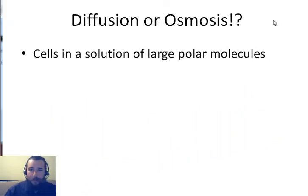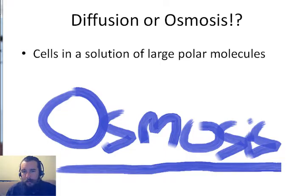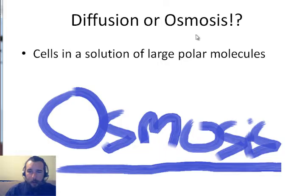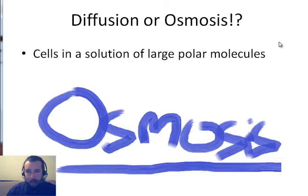Next scenario: cell is in a solution of larger polar molecules — what do you say? That's right, it's osmosis. Large molecules cannot go through the cell membrane, so osmosis happens to regulate the concentrations and get to equilibrium instead.